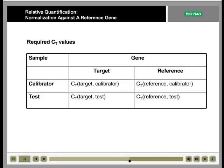To use this method, you must first determine the expression levels of the target and reference genes in all sample types using RT-qPCR. We will demonstrate the calculation for the most simple experimental design, one that uses a single test and a single calibrator sample, and a single target and single reference gene. In this scenario, four CT values are determined.